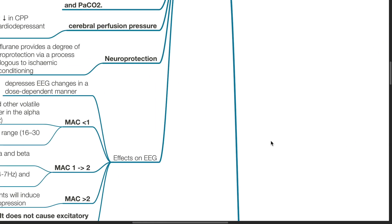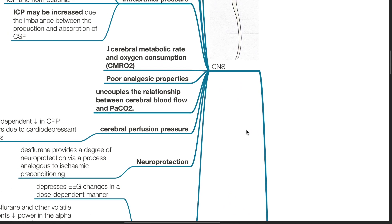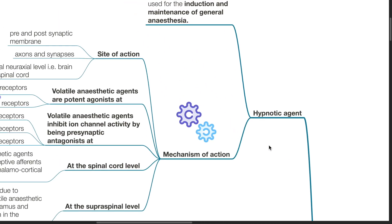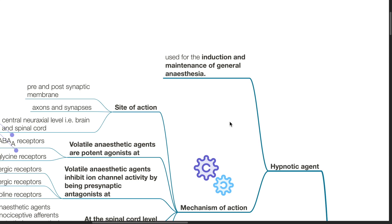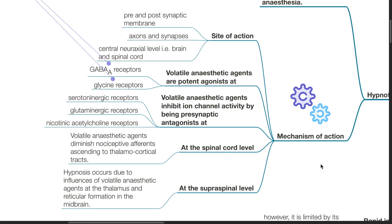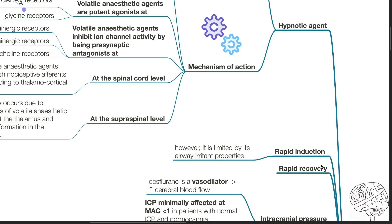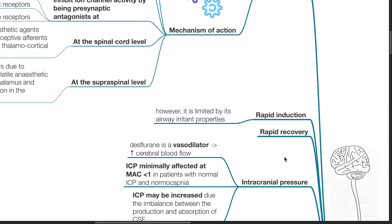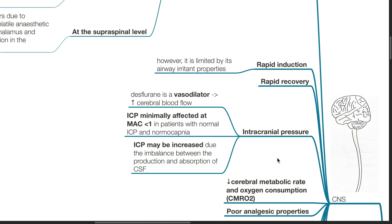Pharmacodynamics. Effects of desflurane on the central nervous system. Desflurane is a hypnotic agent used for induction and maintenance of general anesthesia. It has a similar mechanism of action compared to sevoflurane — kindly refer to the video on sevoflurane for further details. There is rapid induction of anesthesia with desflurane; however, it is limited by its airway irritant properties. There is rapid recovery. Desflurane is a vasodilator that increases cerebral blood flow and may affect ICP. However, ICP is minimally affected at MAC values of less than 1 in patients with normal ICP and normal compliance.